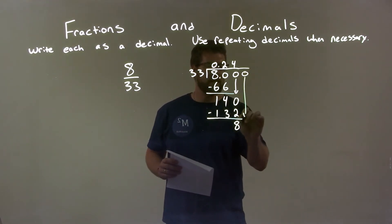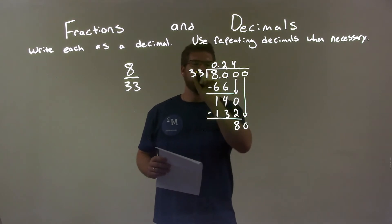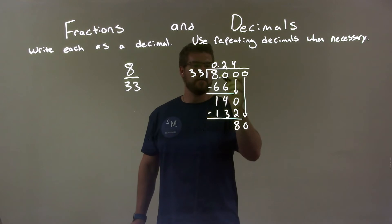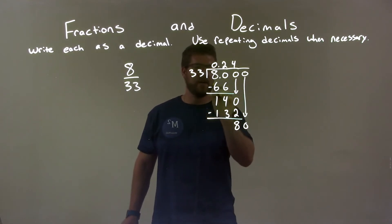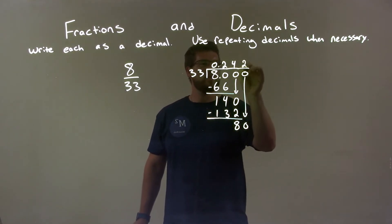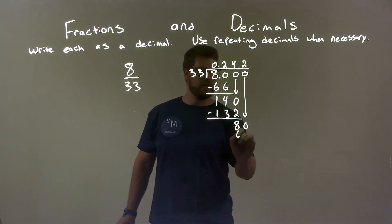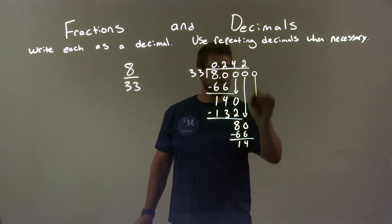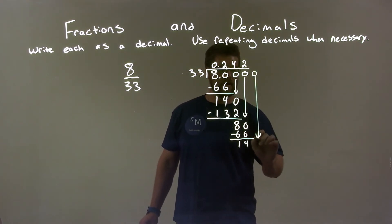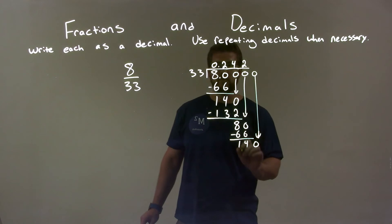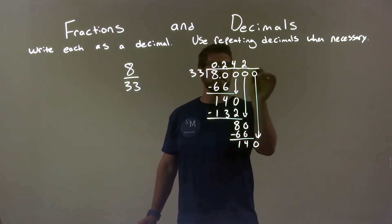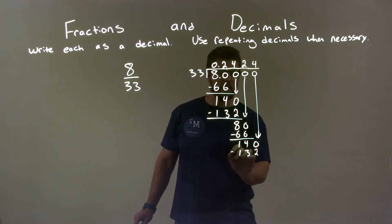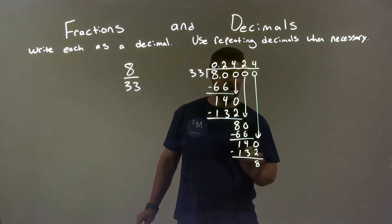We add another zero, bring it down — zero right here — and 33 goes into 80. Well, I've seen that before. I had to put a 66, right? Two times 33 gave me that 66. So we put a two there. Two times 33 is 66. We subtract it, and we get 14 again. I bring another zero out, bring it down, and I'm left with 140. And then we do the same process again. Four times 33 is 132. And then we can see we got an 8 there.